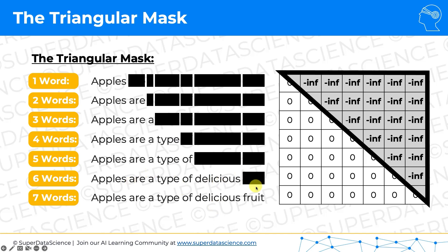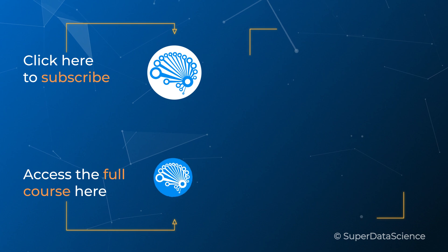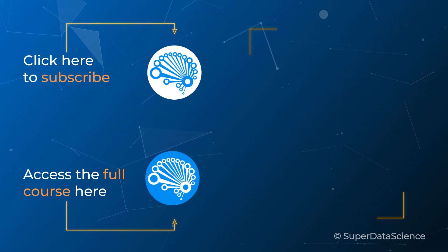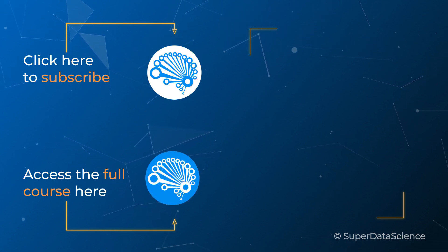In a causal model like GPT and large language models, the model has to predict the next word that logically follows as a cause of the previous words — and that's why it's also called a causal mask or triangular mask. Make sure to check out these videos or the full course in the description to continue your learning — I look forward to seeing you there.